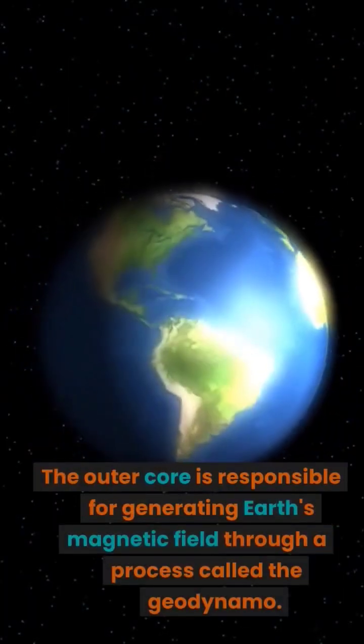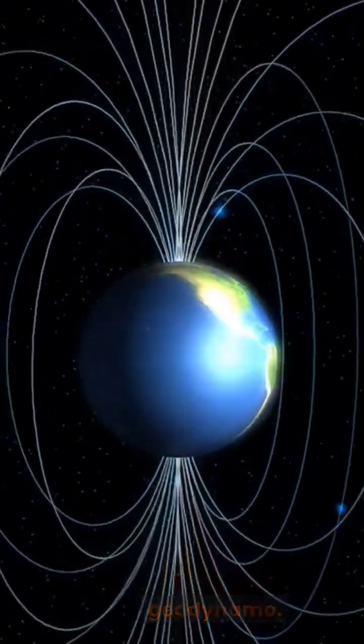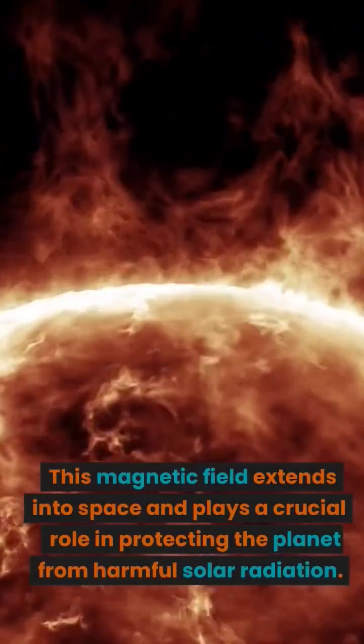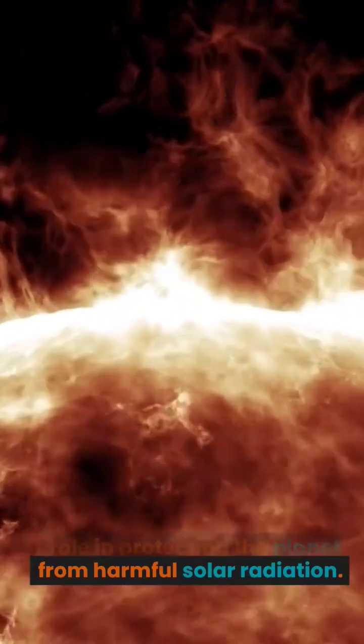The outer core is responsible for generating Earth's magnetic field through a process called the geodynamo. This magnetic field extends into space and plays a crucial role in protecting the planet from harmful solar radiation.